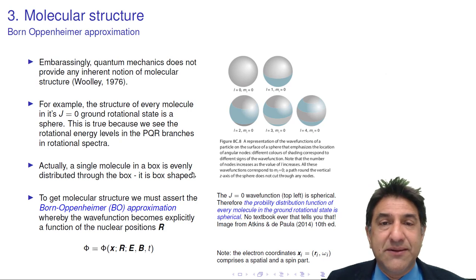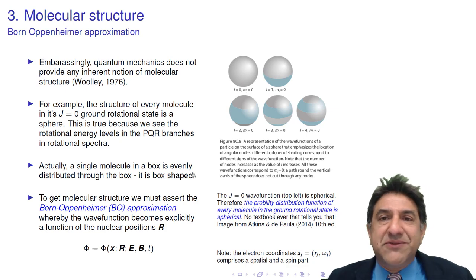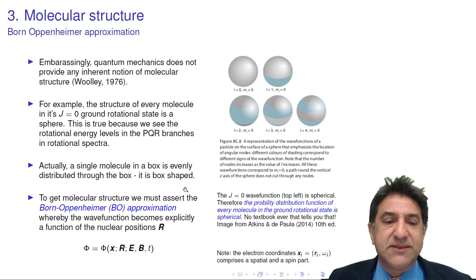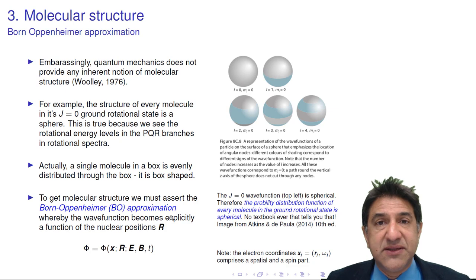So, how is it that molecules have a structure? There are various arguments to say whether a molecule does have a structure. There is an argument by Born and Oppenheimer where they did a perturbation expansion for the wave function. But essentially what we can say is we assert that the molecule has structure. And how do we do that? We basically fix the nuclei in space at a particular set of points.